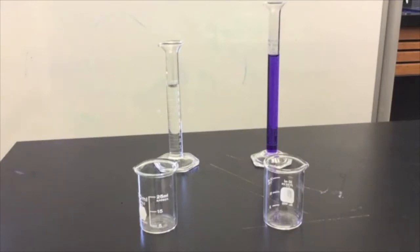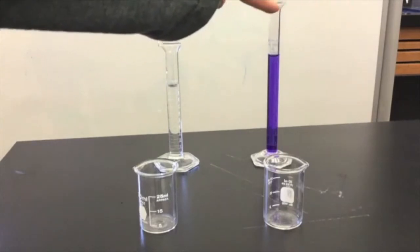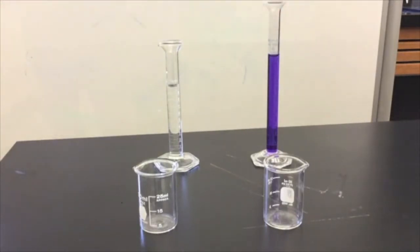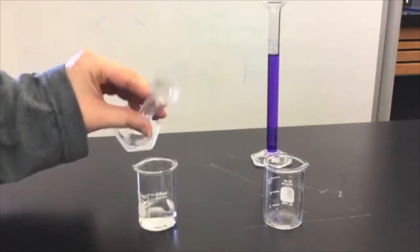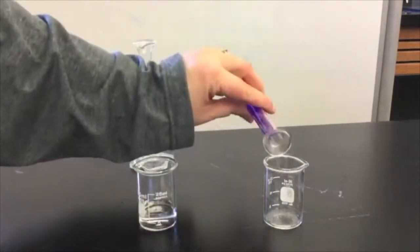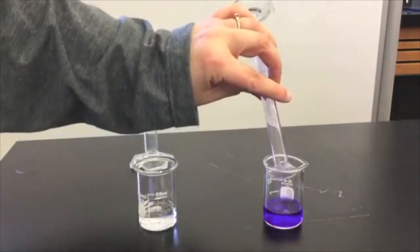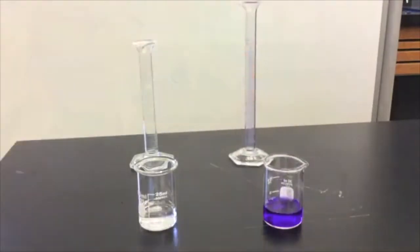Begin by measuring 10 milliliters each of the sodium hydroxide and the crystal violet. Pour each of these into separate small beakers. Then place the beakers into an ice bath, this way they will be very cold when it is time to do our second trial at a lower temperature.